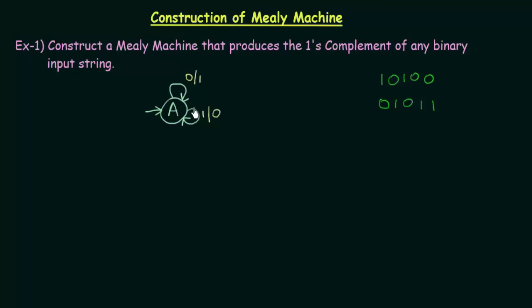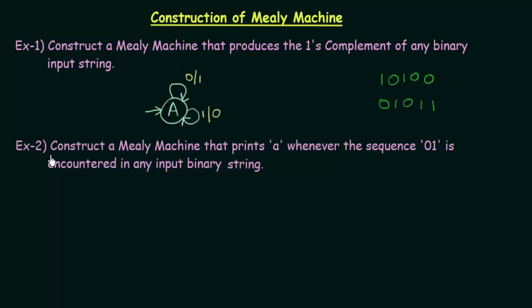Now let us see another example. Here we have our second example: construct a Mealy machine that prints A whenever the sequence 0, 1 is encountered in any input binary string. We need to design a Mealy machine that will give the output A whenever the sequence 0, 1 is encountered. Our inputs could be 0s and 1s, and our outputs could be A's and B's. We should print A when 0, 1 is encountered.